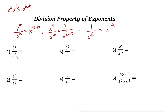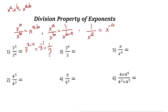The first example: the bases are the same — it's 3 cubed over 3 to the power of 4. This equals 3 to the power of 3 minus 4, which is negative 1. So the answer is 3 to the power of negative 1, which can be written as 1 over 3.